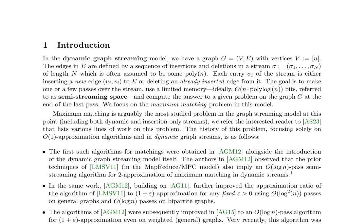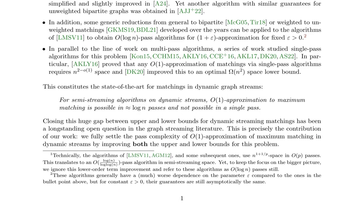The dynamic graph streaming model involves processing a graph with vertices V and edges E, defined by a sequence of insertions and deletions in a stream σ of length n, where each entry σ_i is either inserting or deleting an edge. The goal is to make one or a few passes over the stream using limited memory and compute the answer on the graph G at the end of the last pass. Previous work led to O(1) approximation algorithms and O(log n) pass semistreaming algorithms, but a significant gap remains between upper and lower bounds. This paper aims to settle the pass complexity of O(1) approximation of maximum matching in dynamic streams by improving both bounds.